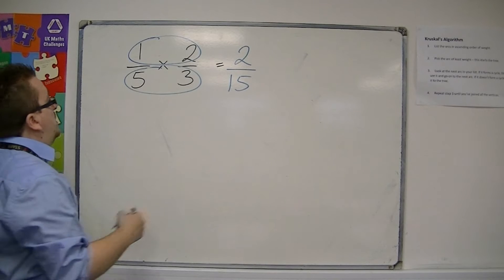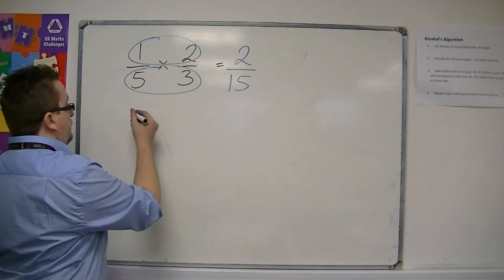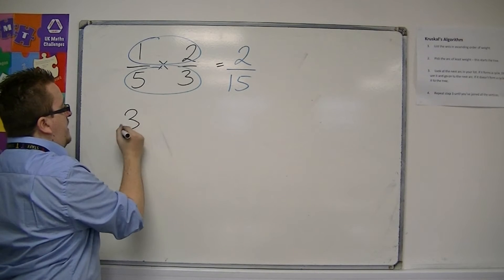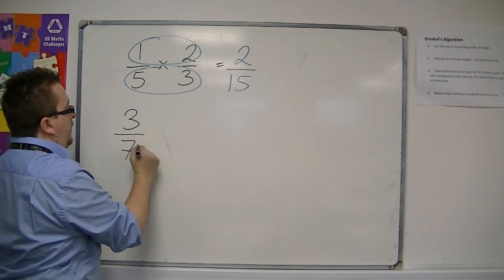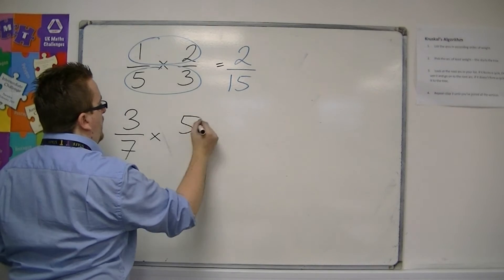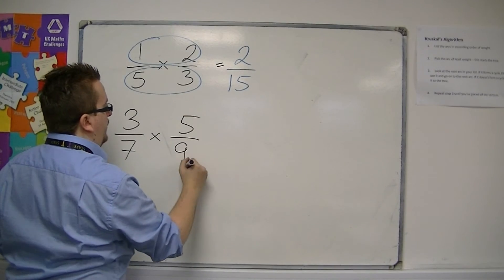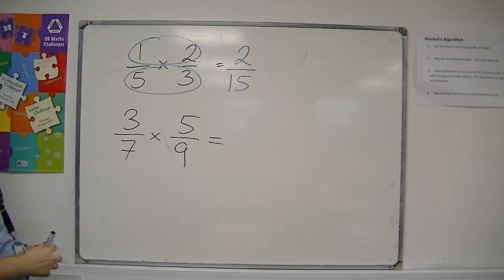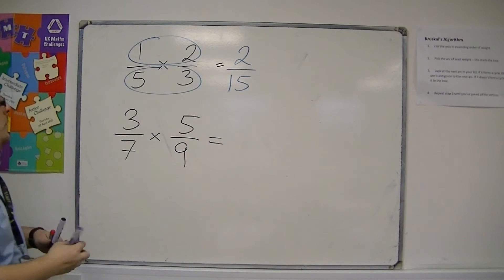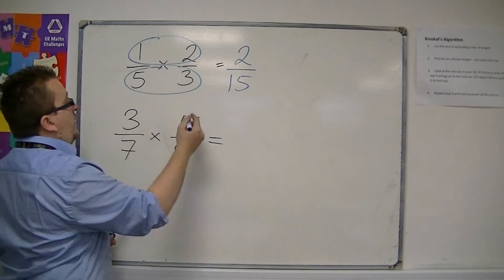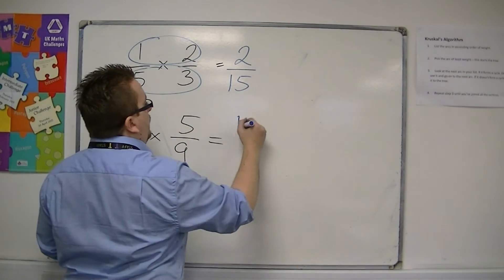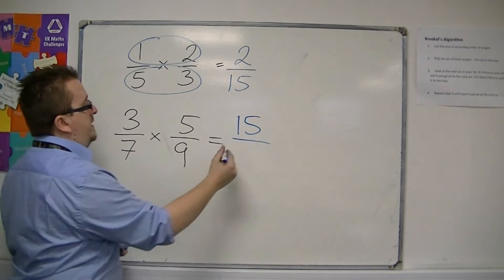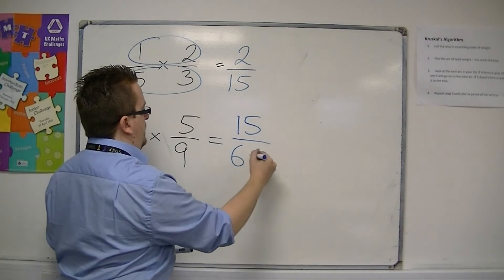Another example would be 3 sevenths times 5 ninths. So we get 3 times 5 is 15, and 7 times 9 is 63.